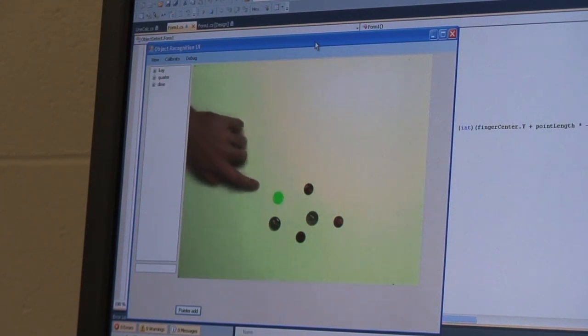Perhaps you could point at a bolt and say 'this is a bolt' and then the program would keep track of the bolt. Then you could tell the program to move the bolt somewhere and the robotic arm would do that.